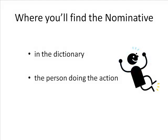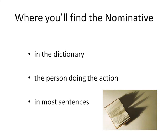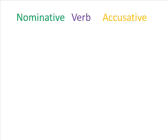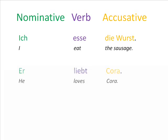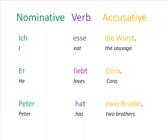The nominative is the case that you use for the person that's doing the action. Most sentences, and certainly every simple sentence like the sort you learn when you're just starting to learn the language, will have a nominative in it. The simplest sentences generally take the form nominative, verb, accusative. For instance, 'Ich esse die Wurst' — I eat the sausage — 'Er liebt Cora' — he loves Cora — or 'Peter hat zwei Brüder' — Peter has two brothers.